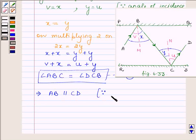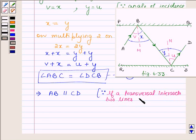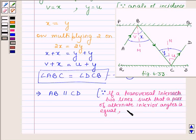Since if a transversal intersects two lines such that a pair of alternate interior angles are equal, then the two lines are parallel. So this implies line AB is parallel to CD.